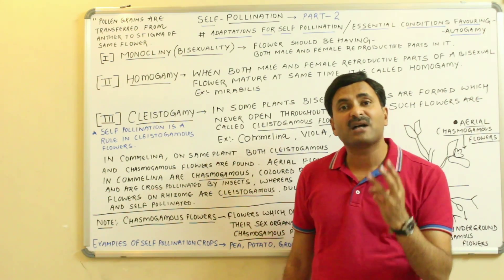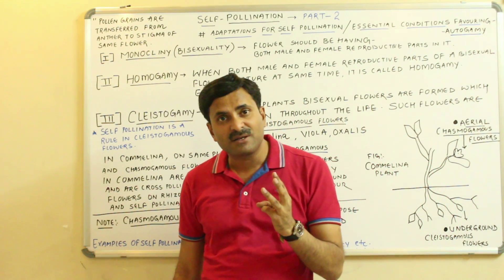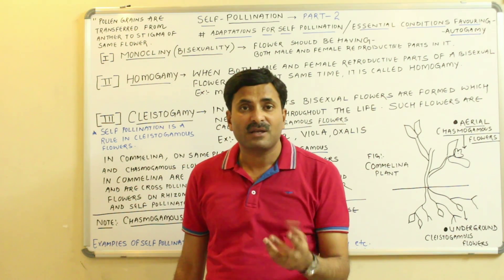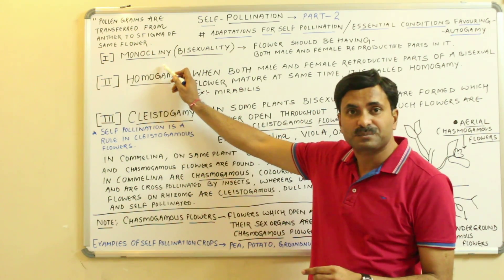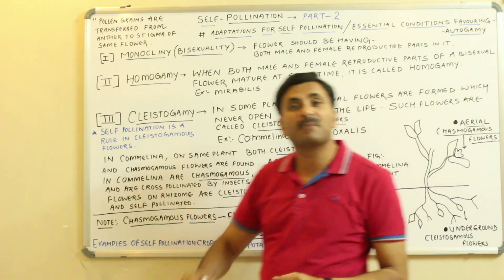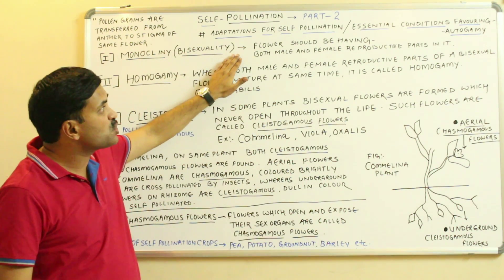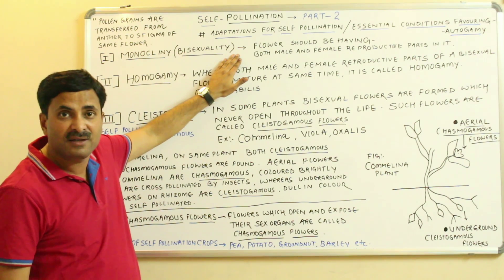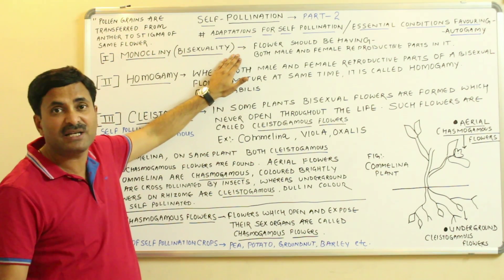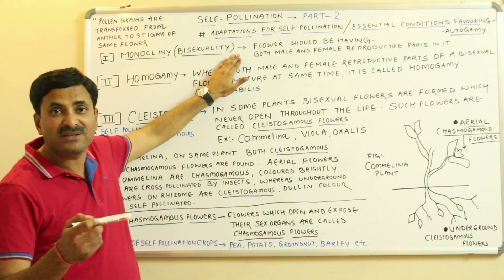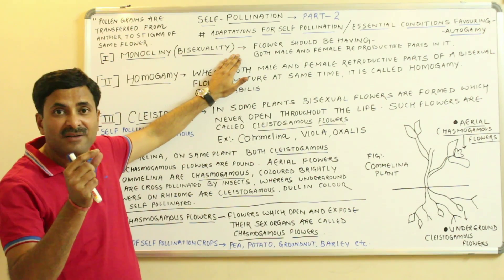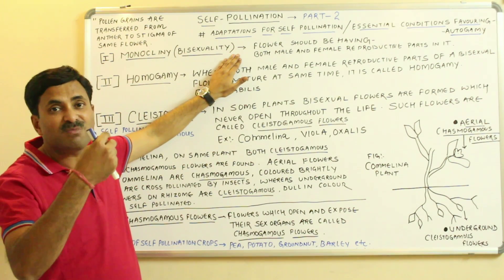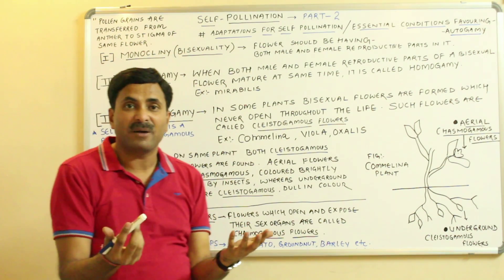There are three essential conditions which favor self-pollination. The very first is known as monocliny. Monocliny means bisexuality — that is, the flower should have both male and female reproductive parts in it. In a bisexual flower, self-pollination is favored because the anther and the stigma are very close to each other, and the pollen grains released by the anther will be easily deposited on the stigma.